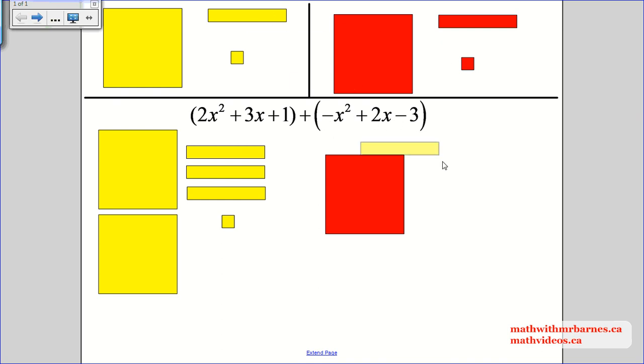I got plus 2x, so I got two of these guys, and then I have three of these guys. So, subtract 3, it's the same as negative 3, so 1, 2, 3.